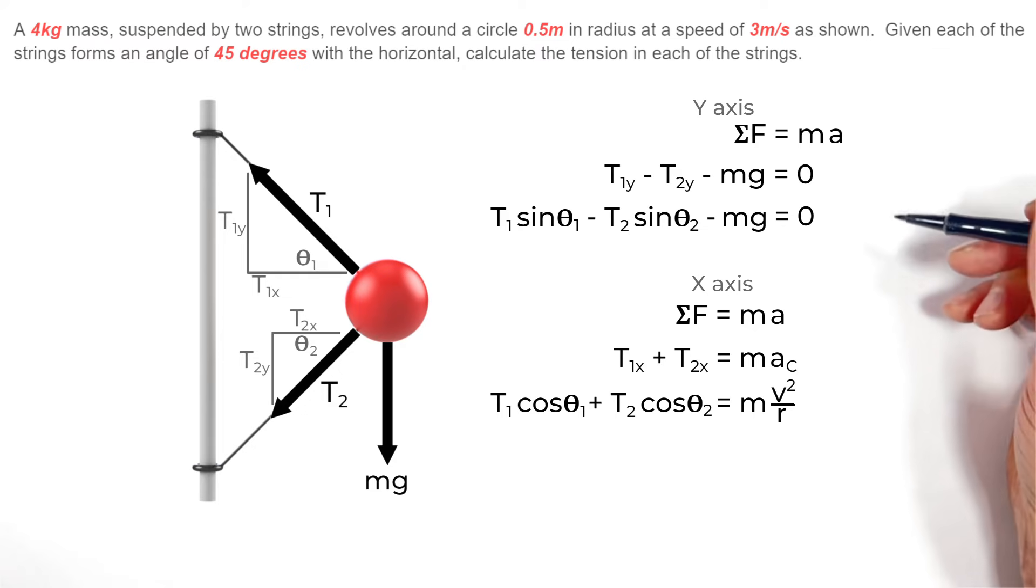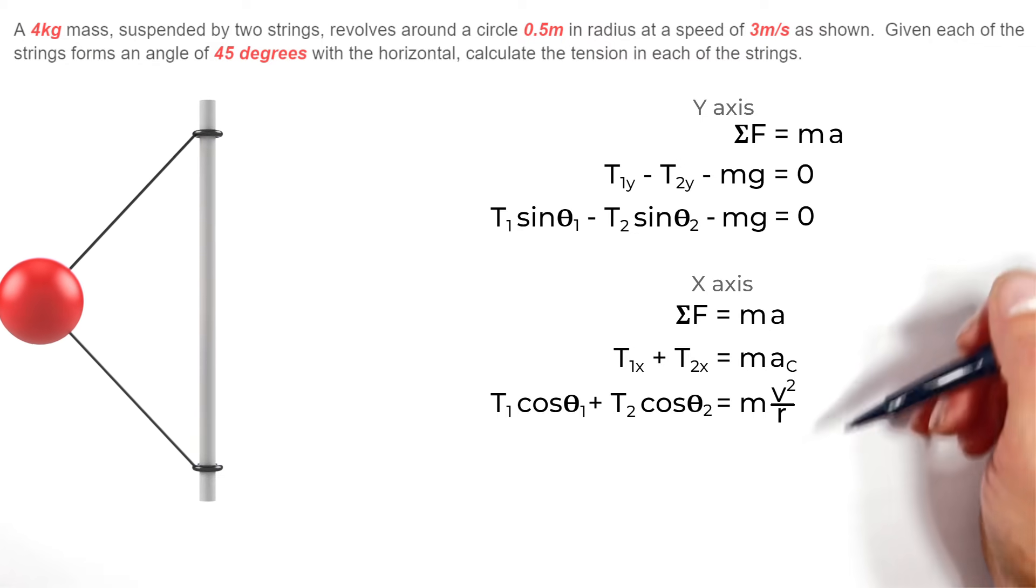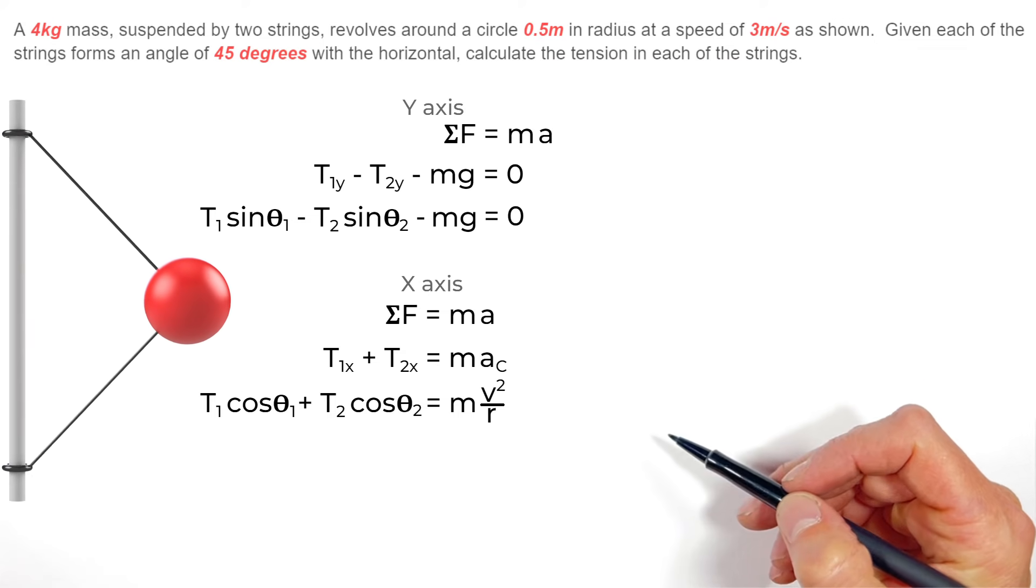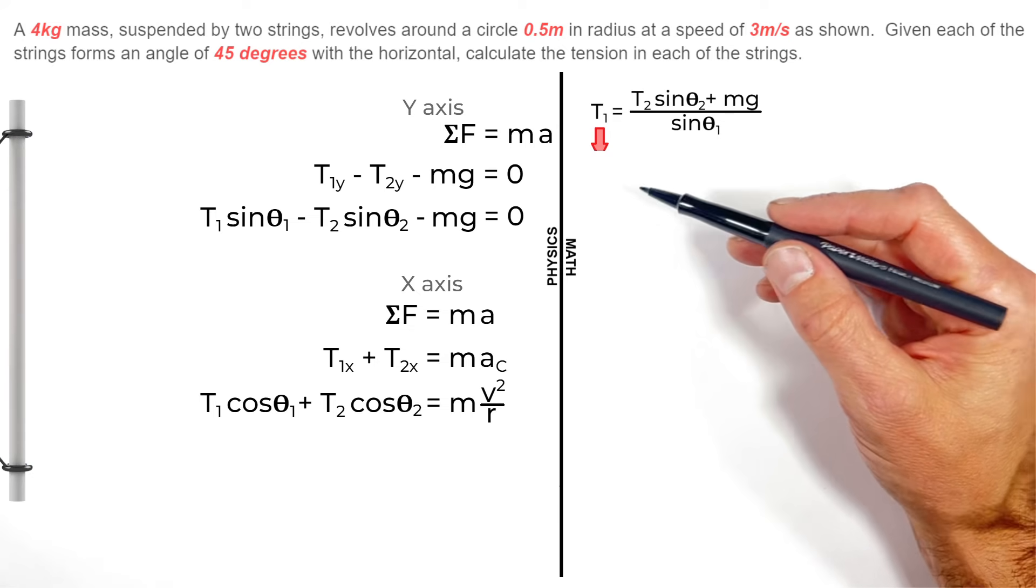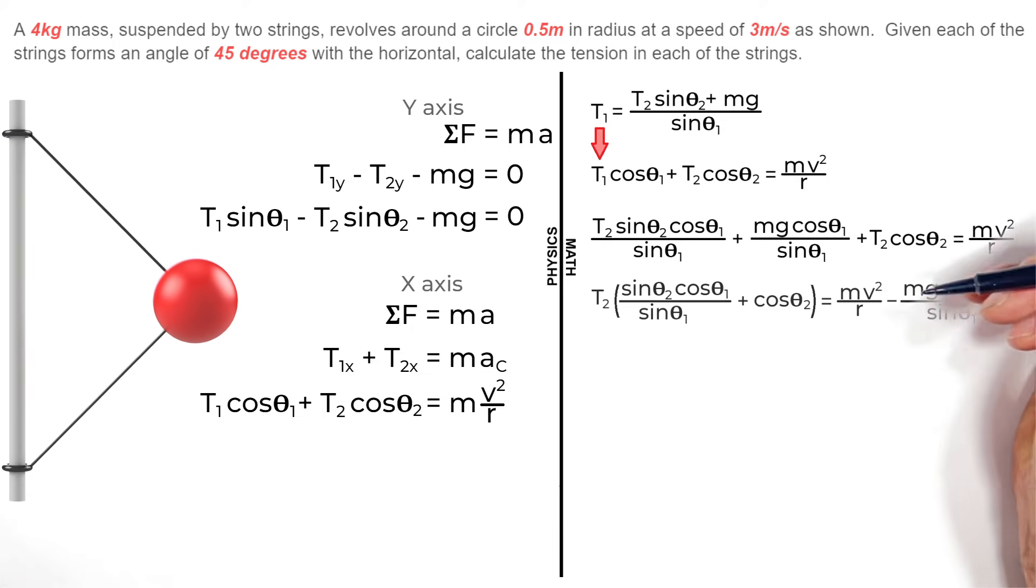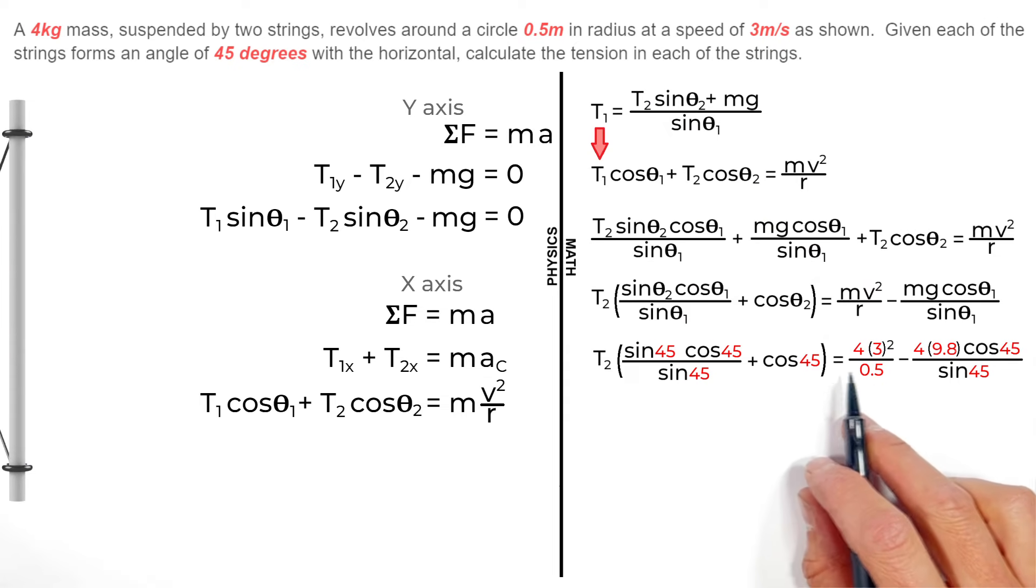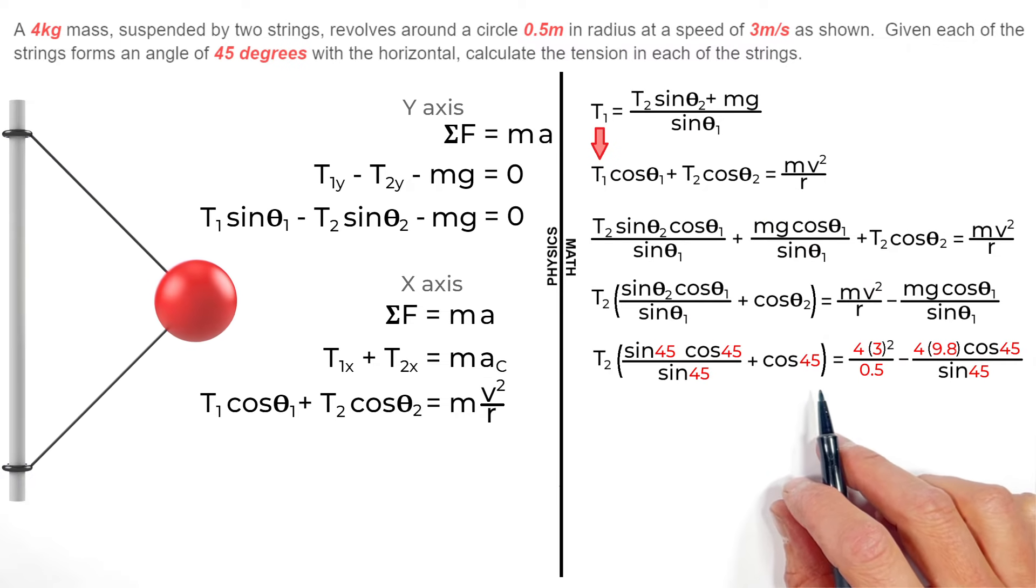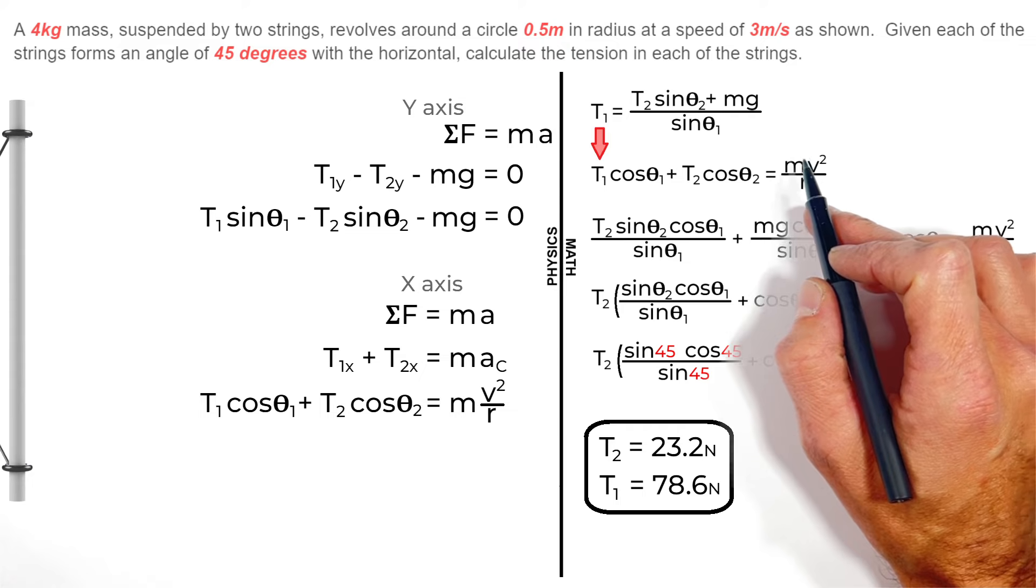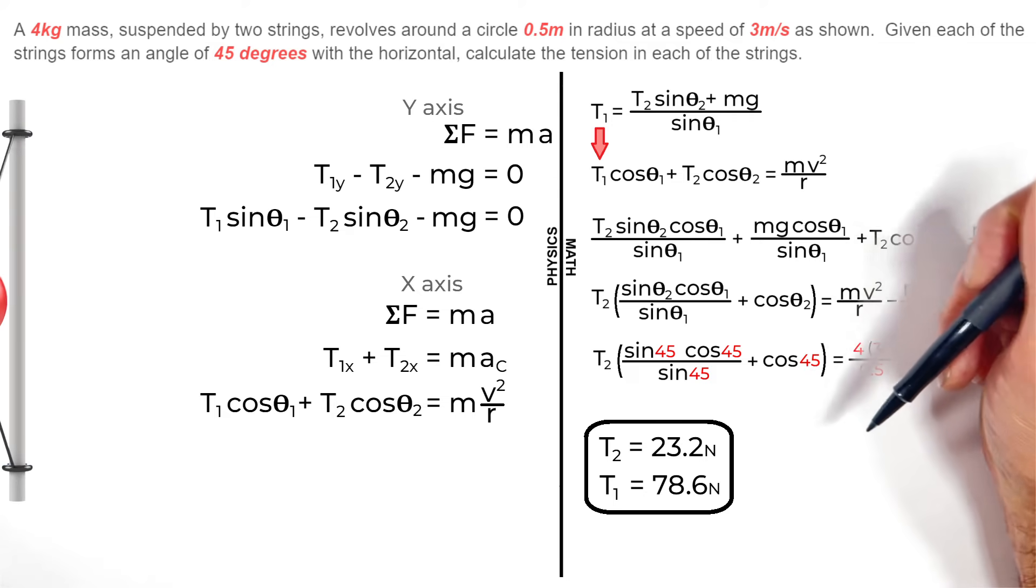So realize at this point we've done all the physics for the whole problem. All that's left now is just some math, that is solving a system of equations and plugging in some numbers. So moving this stuff over here, we're going to rearrange this first equation for T1 and then sub it in down here. What that does is it leaves us with an equation for T2. Now plugging in the mass, radius, velocity and angle into this equation we can solve for T2 and we find this is 23.2 newtons. And turning around and subbing that back in up here for our equation in the y-axis, we find that T1 is 78.6 newtons.